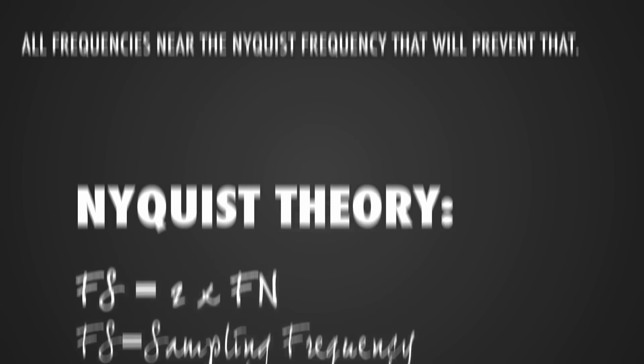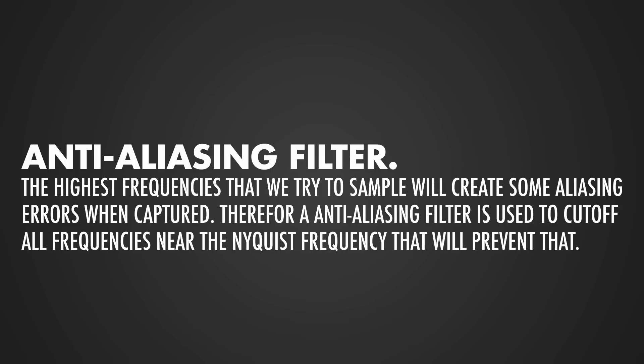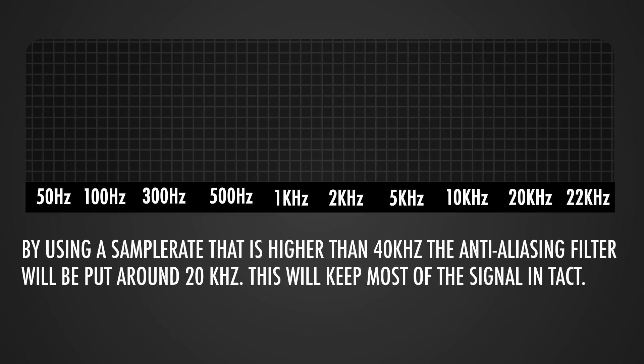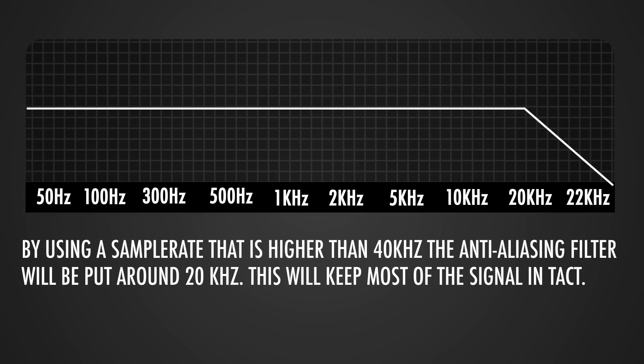The highest frequencies being sampled can cause aliasing errors and other problems, and thus can't be properly captured. We need to filter off the highest frequencies with a low-pass filter, and this is the reason we need a higher sampling rate than 40 kHz to properly capture a 20 kHz frequency — keeping in mind that the cutoff frequency of the filter is around 20 kHz, so we don't lose too much of the original signal.